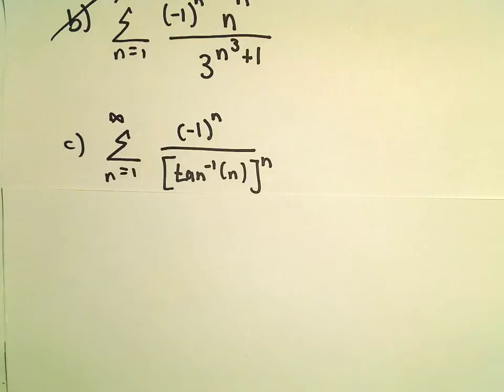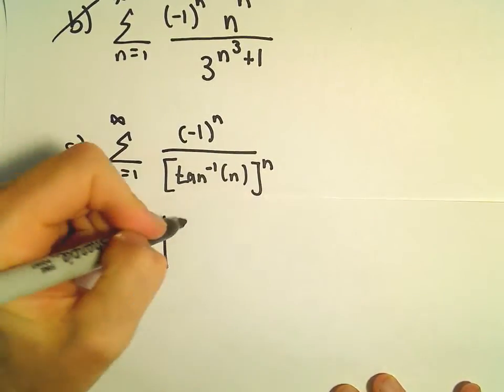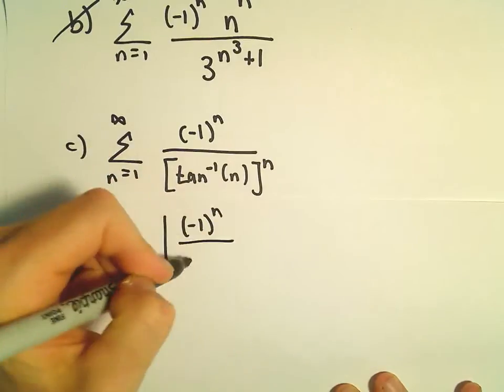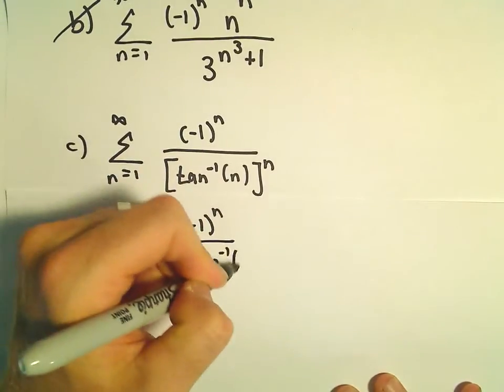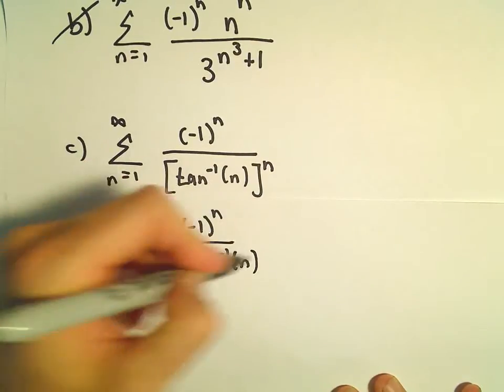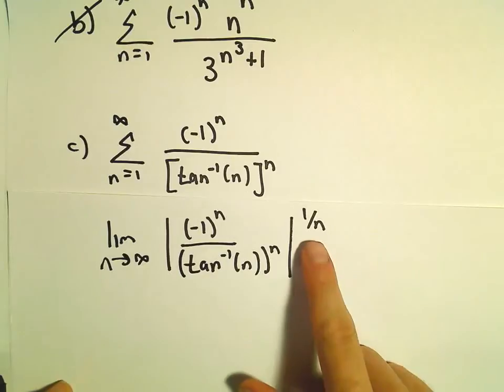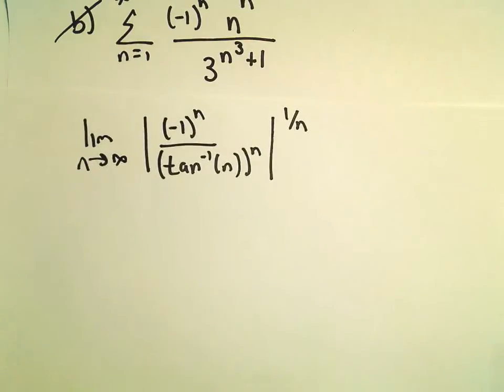So we'll take the limit as n goes to infinity. We'll put this in absolute value, and then we'll raise all this to the 1 over n power, again just using the root test here.